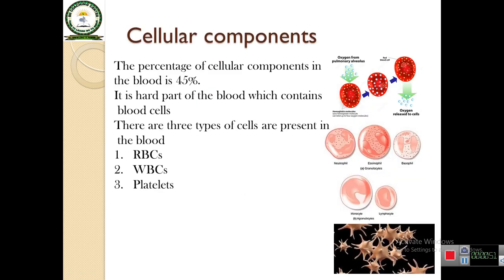The cellular components of the blood make up 45% of blood. It is the hard part of the blood which contains blood cells. There are three types of blood cells present in the blood: WBCs, RBCs, and platelets.